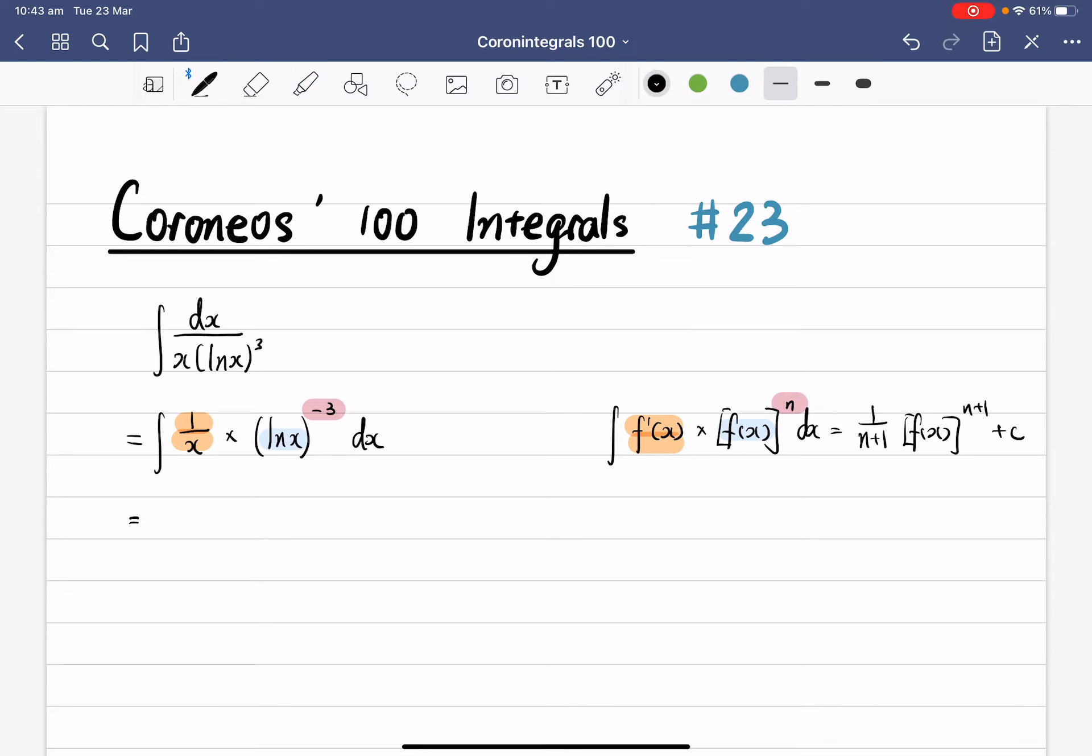So then when we integrate this one, we increase the power by 1, so that becomes minus 2. And we're going to find the reciprocal of the power and write it in the front, that's negative half, and plus c.